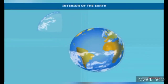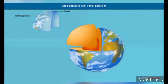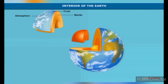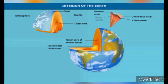The interior of the Earth has three chief layers known as the crust, the mantle, and the core. Each of these three layers has two divisions. The crust, the upper mantle, and the core together make up the lithosphere.